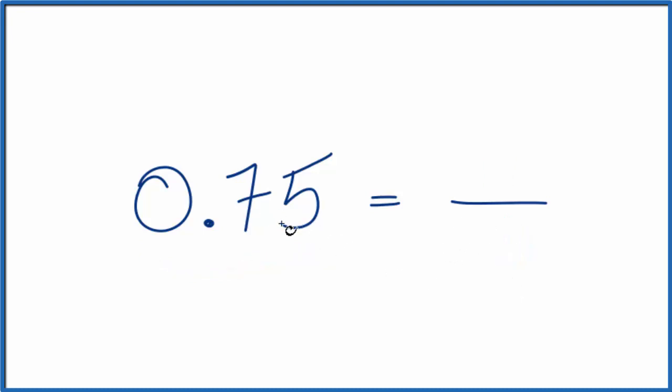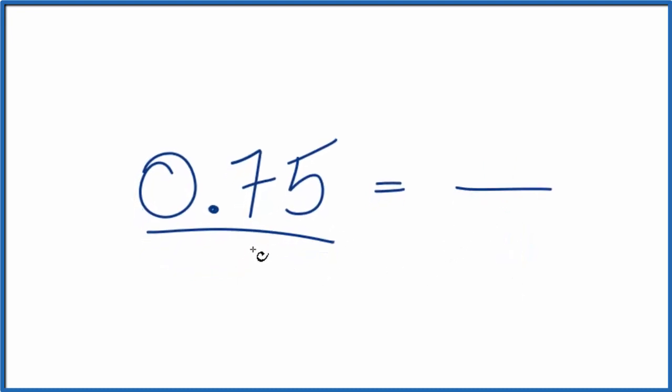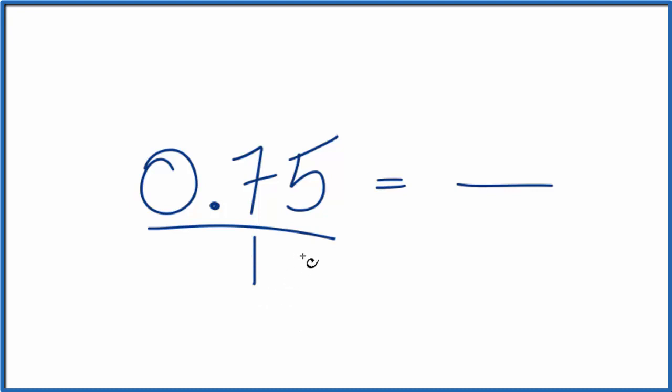First, let's think of 0.75 as 0.75 over 1. It's still 0.75, we're just dividing by 1, but now we have a fraction.